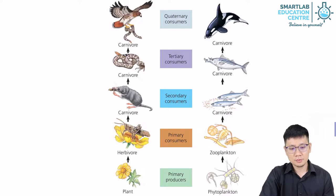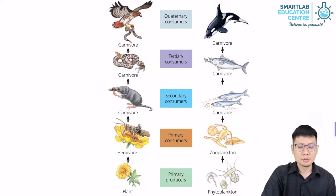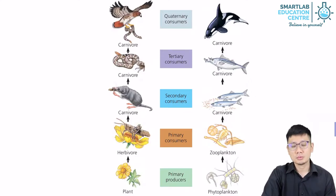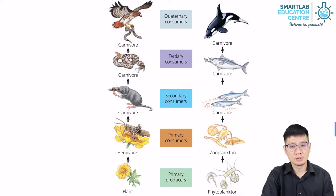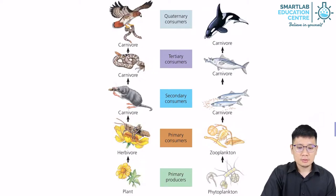In terms of a food chain, we can use the term producers to describe plants — mostly plants — because they can photosynthesize and produce their own food using photosynthesis. And from there onward, we have the consumers.